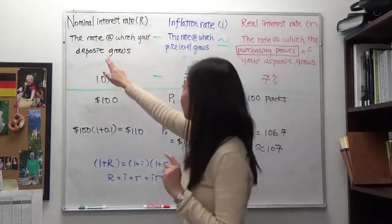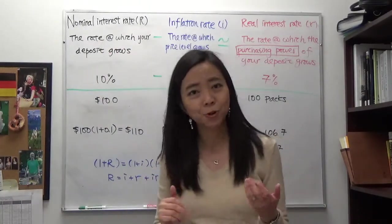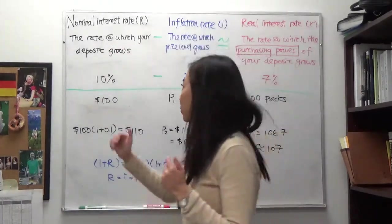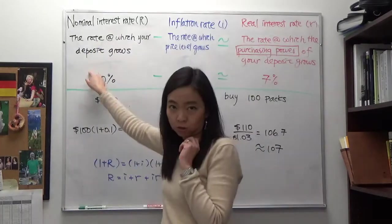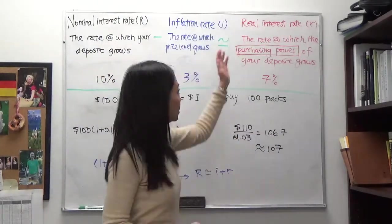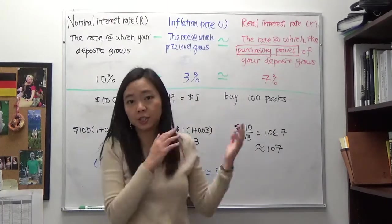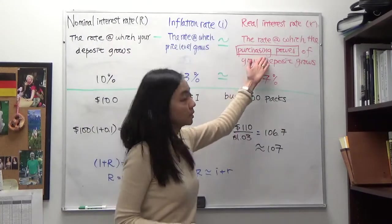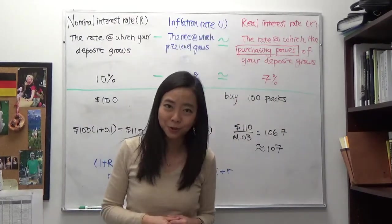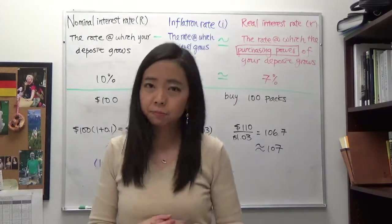So what's the difference between nominal interest rate and real interest rate? Nominal interest rate is the rate at which your deposit grows, and real interest rate is interest rate adjusted for inflation. The definition is the rate at which the purchasing power of your deposit grows.